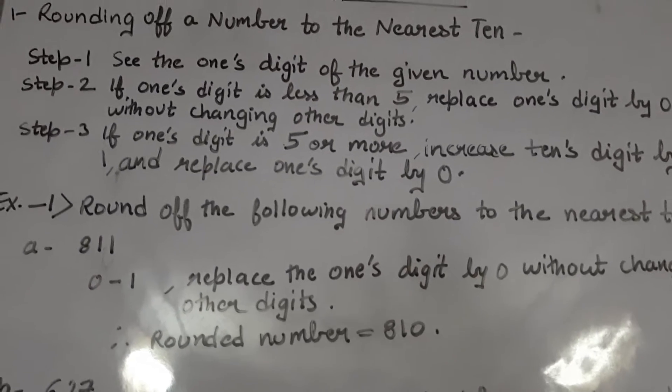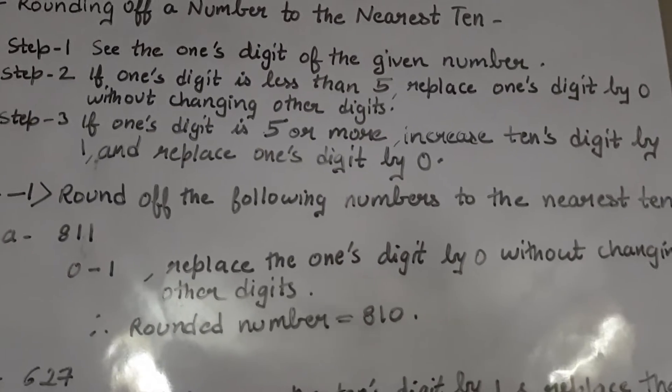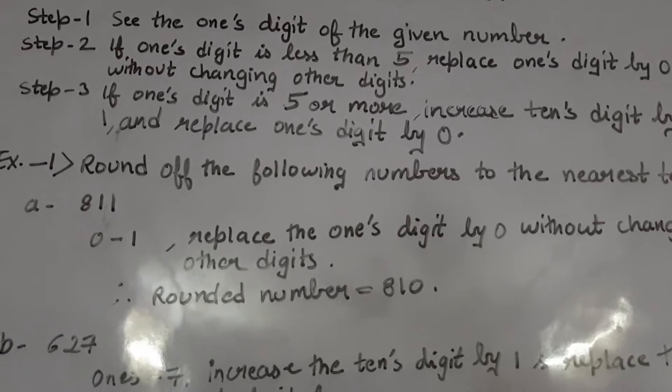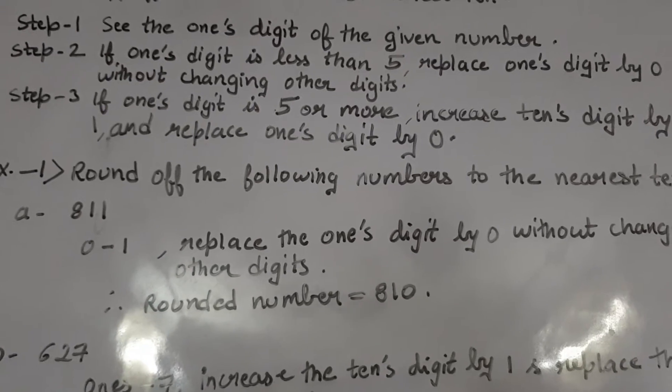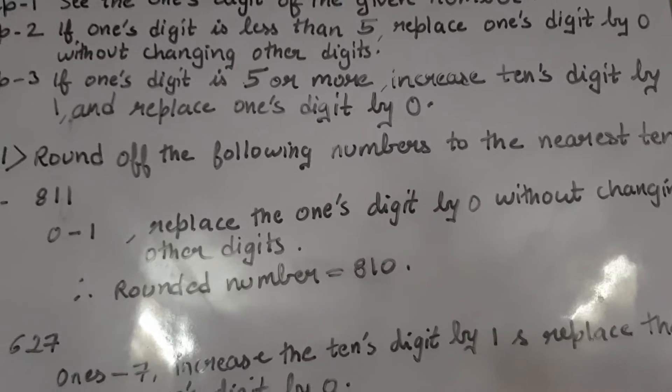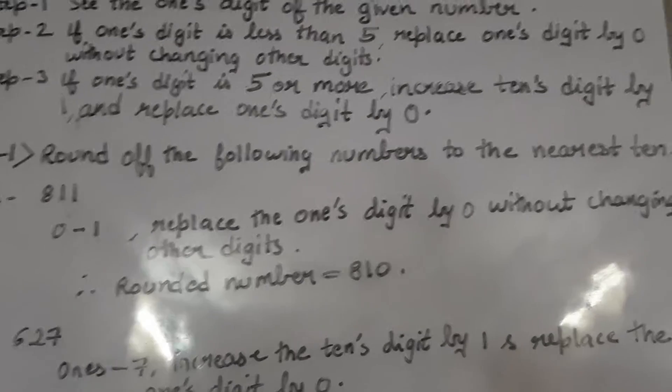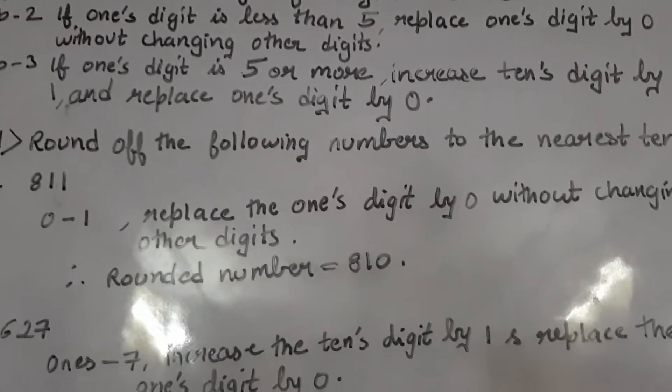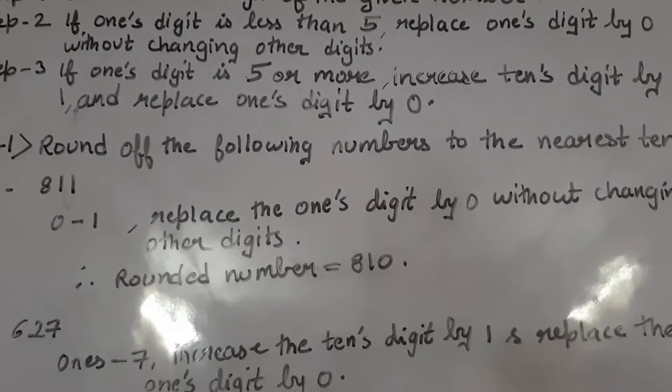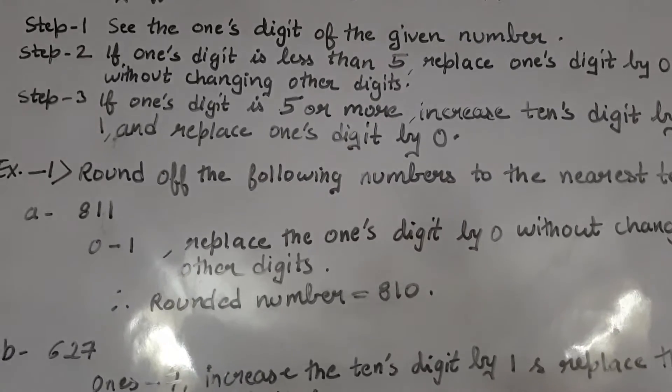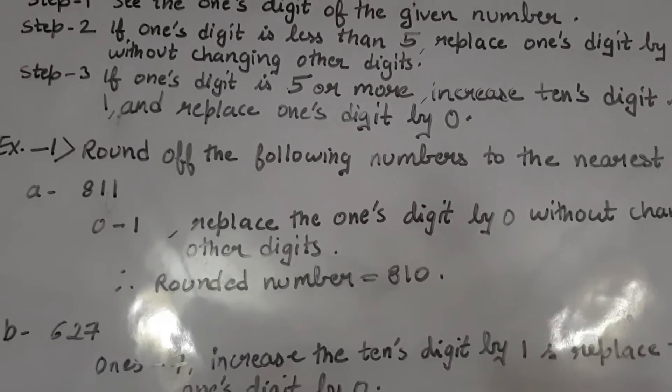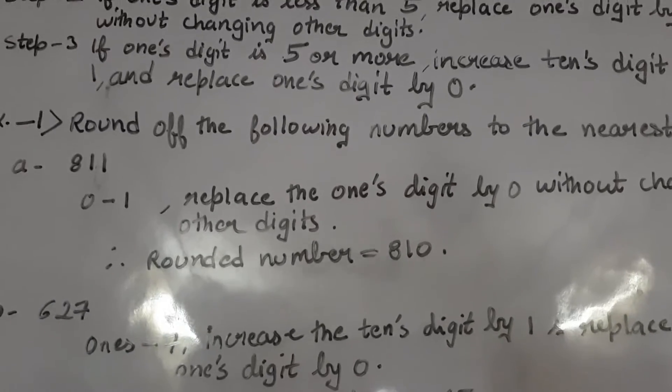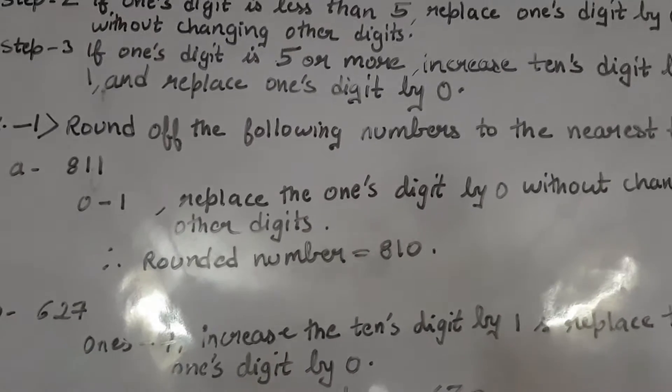And step 2 says: if 1's digit is less than 5, replace 1's digit by 0 without changing other digits. And if 1's digit is less than number 5, like 1, 2, 3 or 4, then always replace that 1's digit number by 0 without changing other digits. Means don't change 10's or 100's or 1000's position.